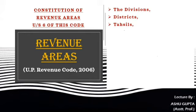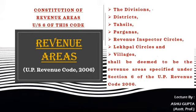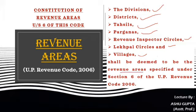Divisions, districts, tahsils, parganas, revenue inspector circles, lekhpal circles, and villages shall all be deemed to be the revenue areas specified under Section 6 of the UP Revenue Code 2006.